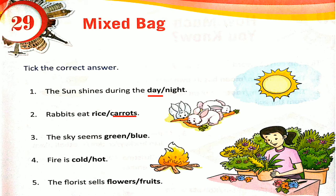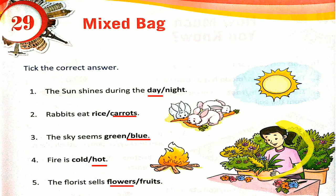Number 3: the sky seems green or blue? The sky seems blue in color. Number 4: fire is cold or hot? Fire is hot. Number 5: the florist sells flowers or fruit? The florist sells flowers. Here we can find a photograph of the florist.